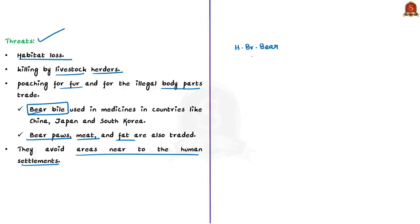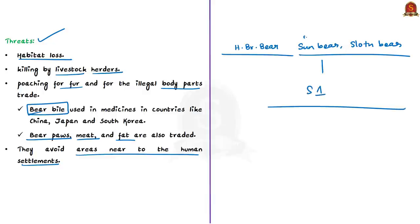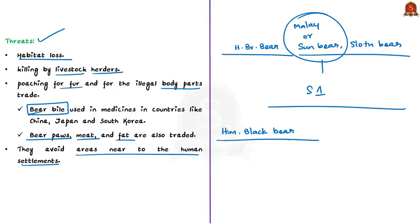Regarding protection status, the Himalayan brown bear, along with the Malayan bear and sloth bear, is protected under Schedule I of the Wildlife Protection Act of 1972. As per some reports, the Himalayan black bear is in Schedule II, though fewer resources say it is listed in Schedule I of the WPA. This information about the Himalayan black bear will be clarified after confirming with the government.